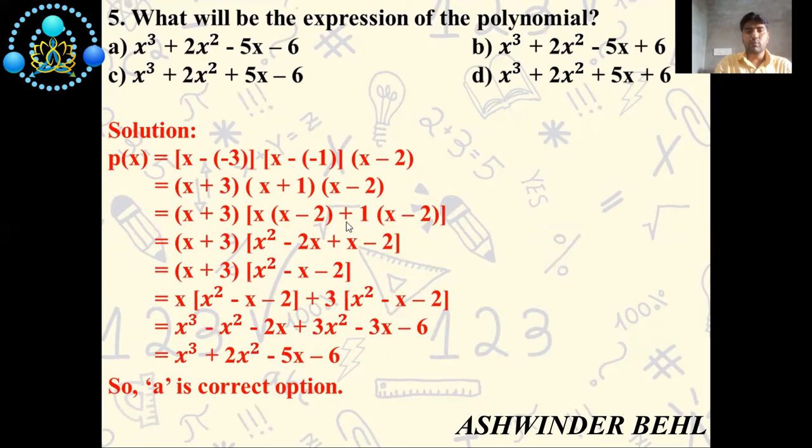(x + 3)(x + 1) = x² - 2x + x - 2. So what do we get here? x² - x - 2.